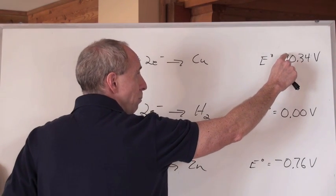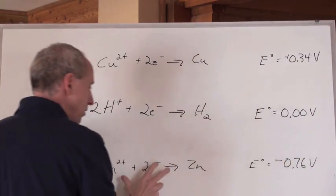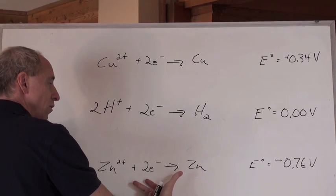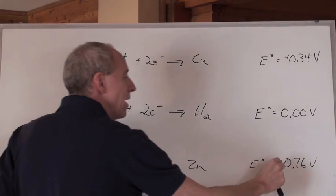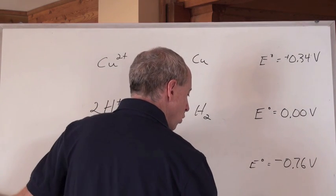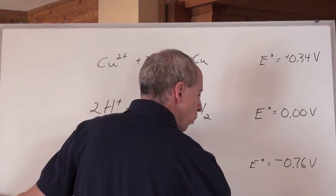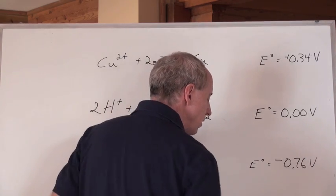which would be positive 0.34 volts plus positive, you reverse the sign to the equation you need to flip around to make oxidation, reverse that sign and add it to this one, and you are going to get a total for that zinc-copper reaction of 1.10 volts. Yeah, sure.